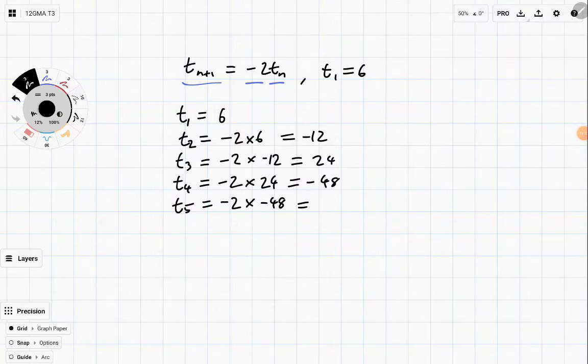And we get positive 96. And notice, you always go from positive to negative to positive to negative to positive.